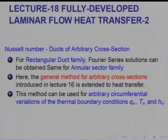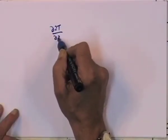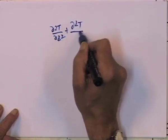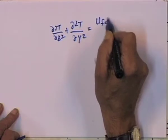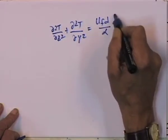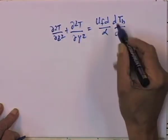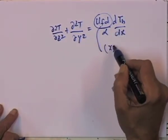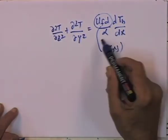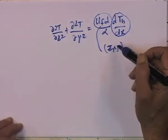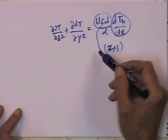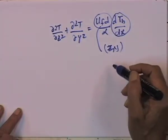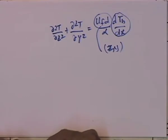Ducts of this type can be solved exactly by the methods described there, because you get a Poisson equation of the type d²T/dz² + d²T/dy² = u_fully_developed / α · (dT_bulk/dx). The fully developed velocity for a non-circular duct has already been obtained as a function of z and y. Substituting for dT_bulk/dx gives a Poisson equation with a right-hand side as a function of z and y, which can be solved using Fourier series.